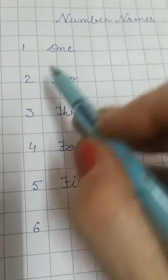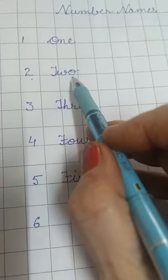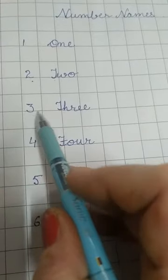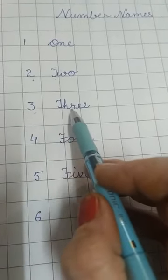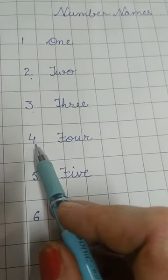O-N-E, one. Then 2. T-W-O, two. Then 3. TH gives the sound of TH. T-H-R-E-E, three.